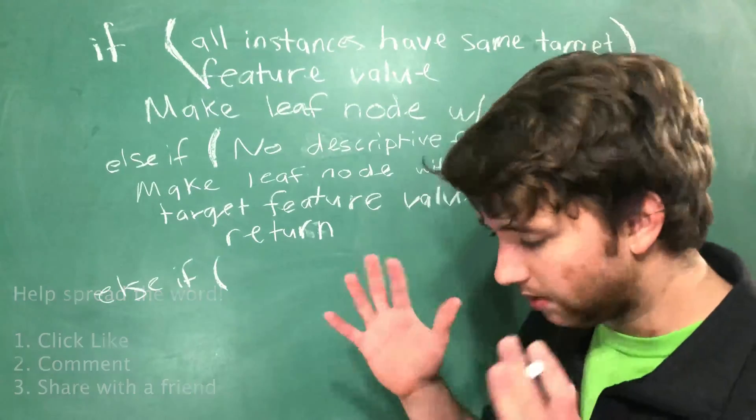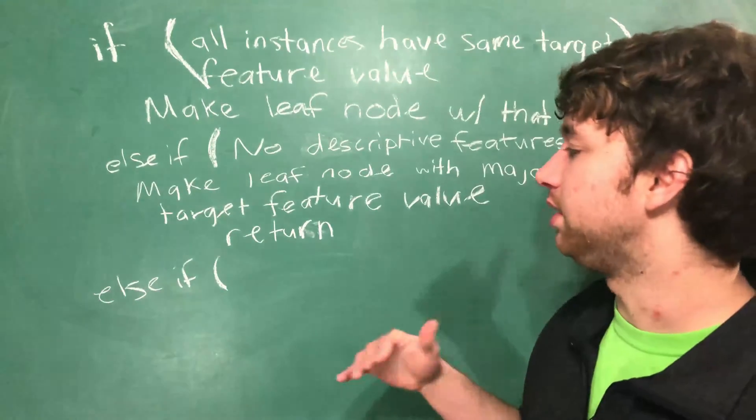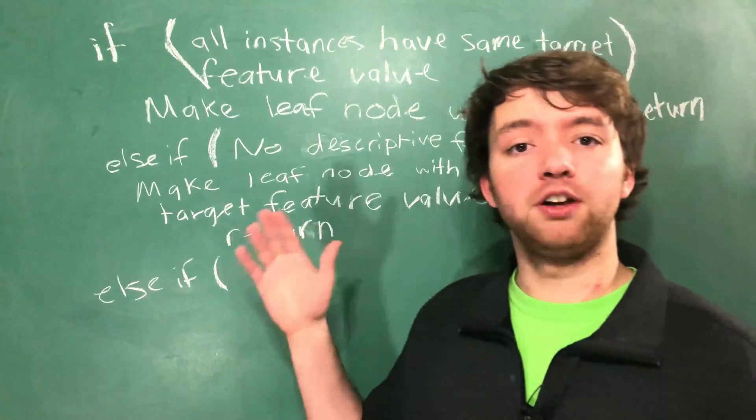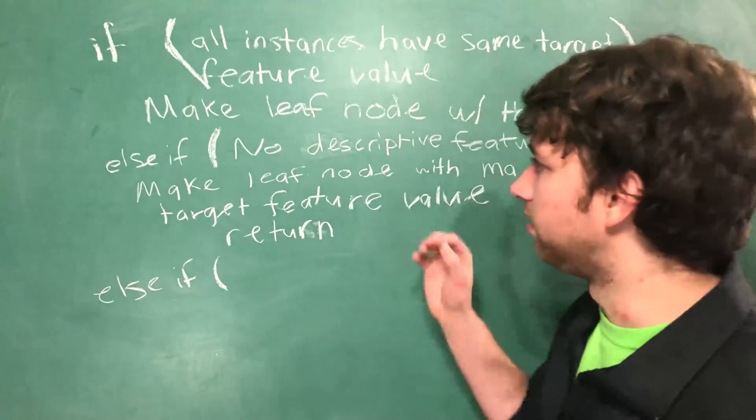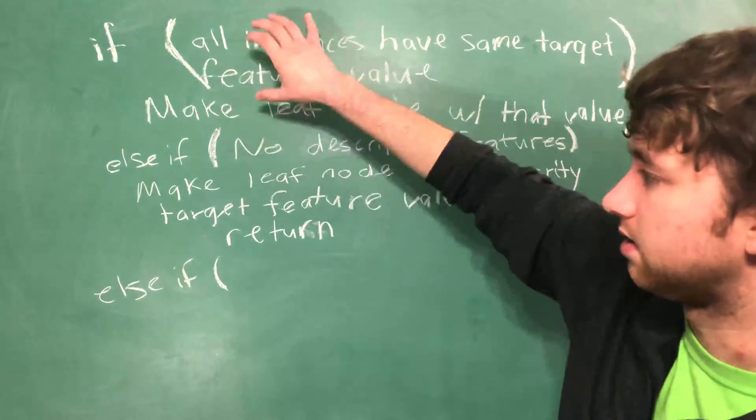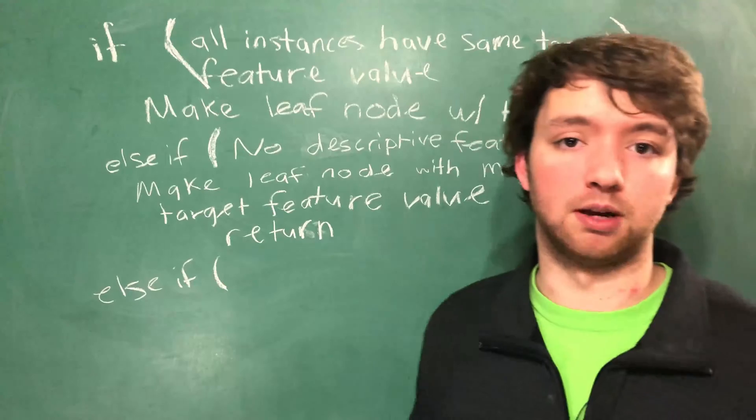Now if you don't remember what that means, that's okay. Generalizing is the ability to make a decision on the target feature value when there is not enough data to do one of these base cases. So I'll write it out and then I'll go through a little example.